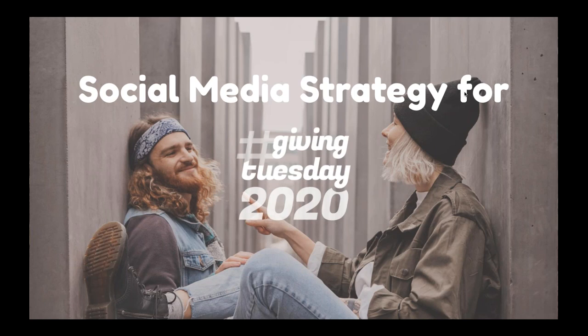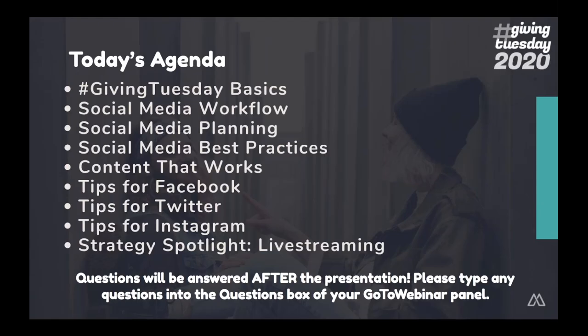We'll go ahead and get started. Thank you everybody for joining me today. This is one of our last webinars for Giving Tuesday because, incredibly, it's October and it's always one of our more fun ones about social media strategy for Giving Tuesday. Here's a quick look at today's agenda. We're going to go through the basics and then really dig into social media workflow, social media planning and best practices, and what you can do on each platform to maximize your impact. We're also going to talk about live streaming because this year has gone off the rails and social media and live streaming is playing a bigger part in our lives than it has in previous years.